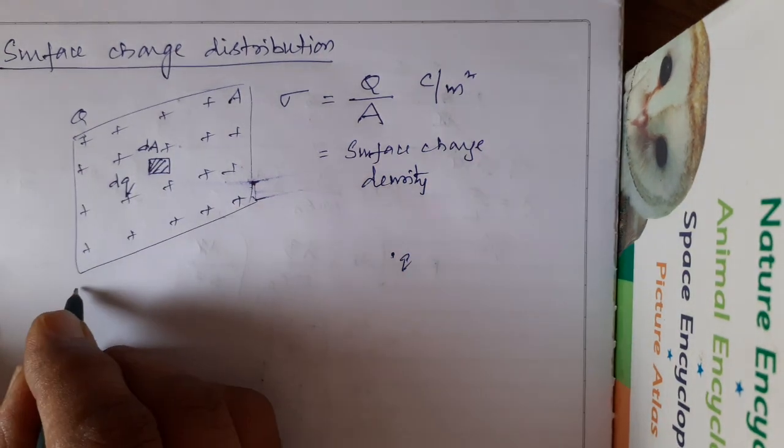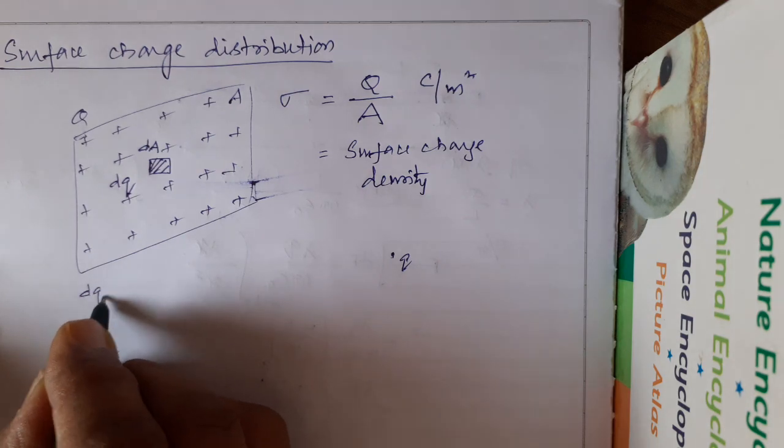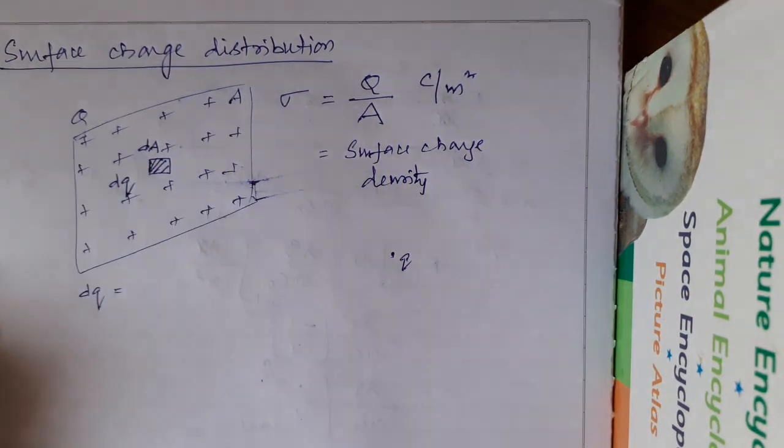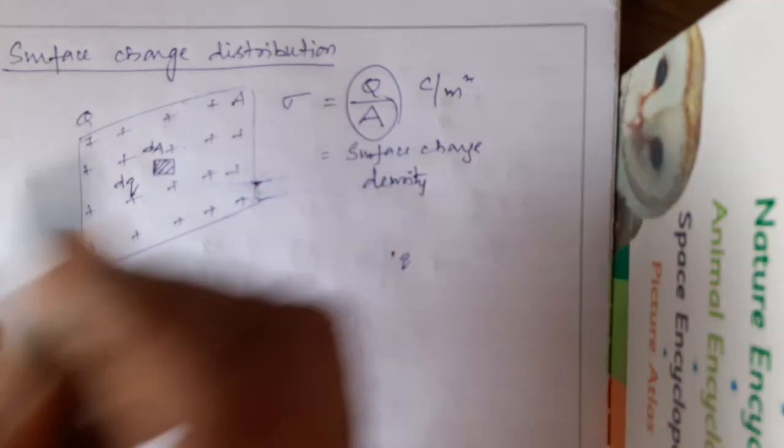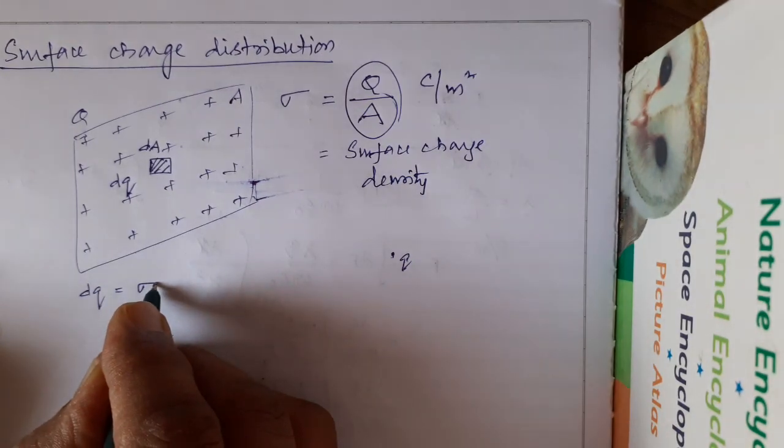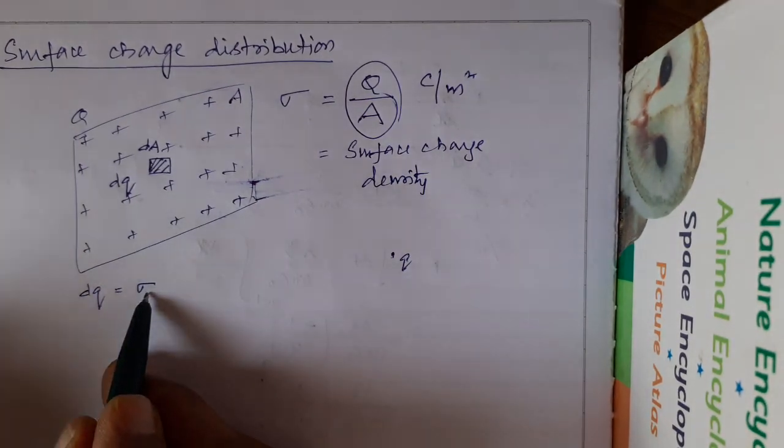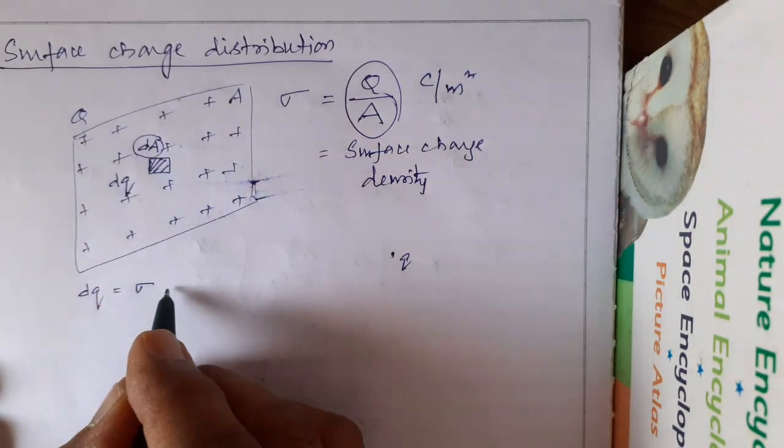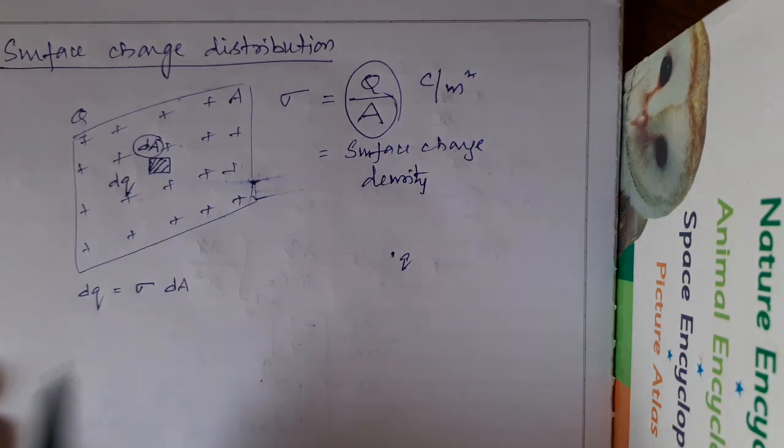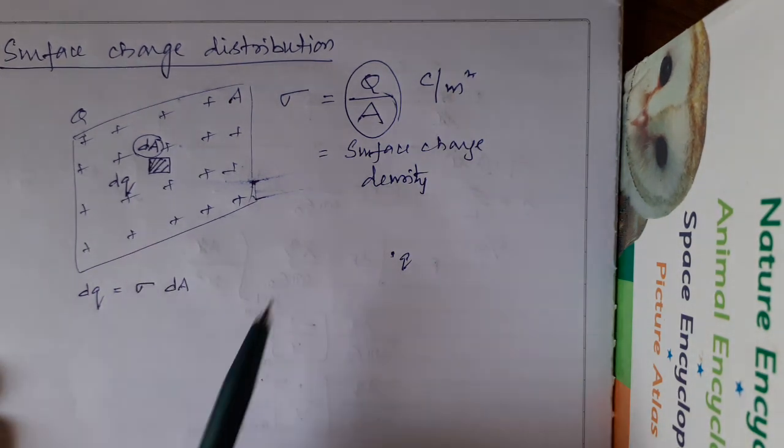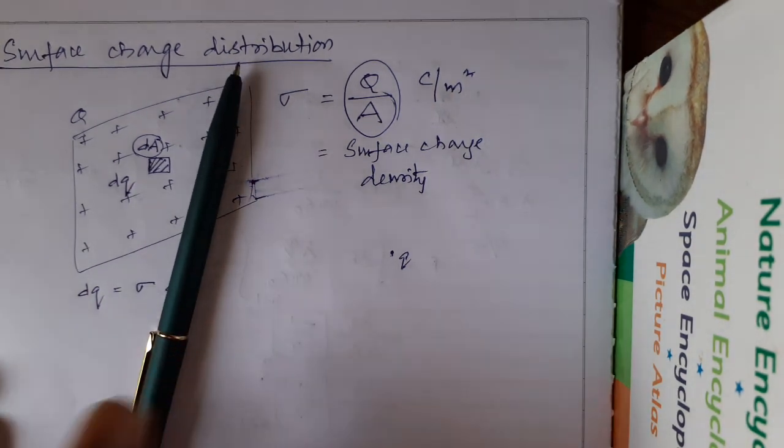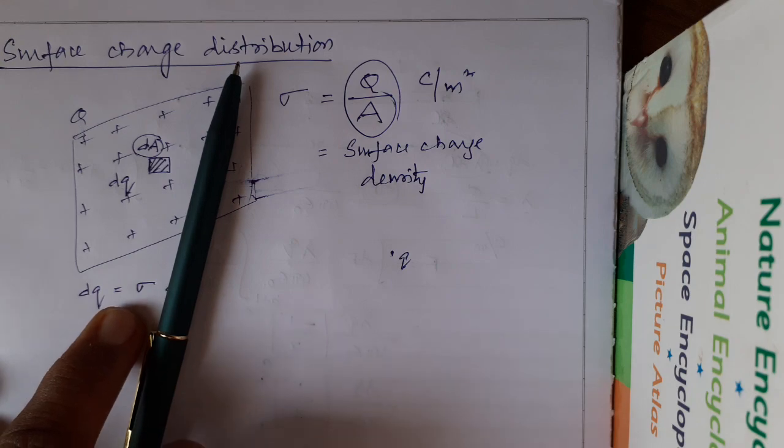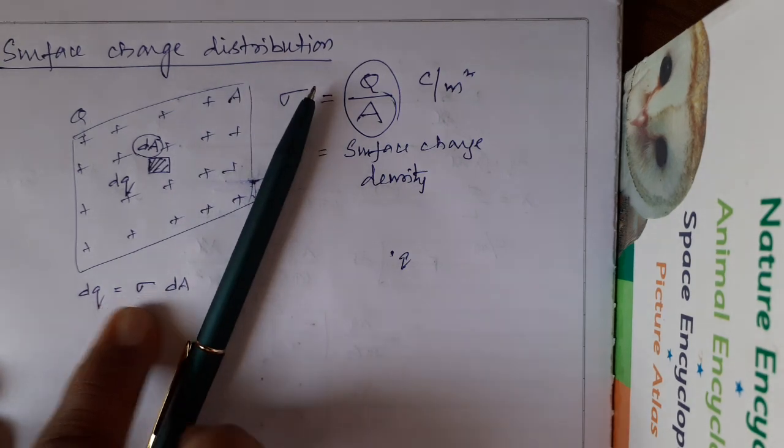So dQ is nothing but charge on the area. What is charge per unit area? Sigma. Sigma is the charge per unit area and on this area dA, the charge would be sigma dA. This is for unit area. Sigma is per unit area and for area dA, this is the charge.